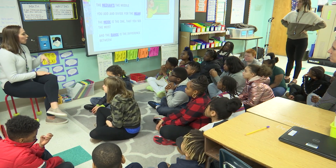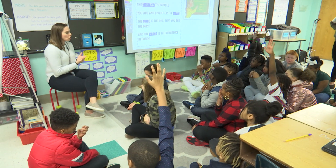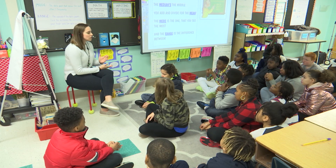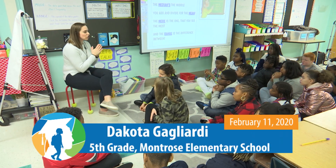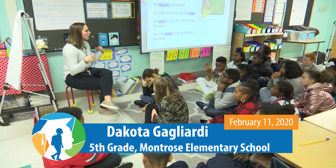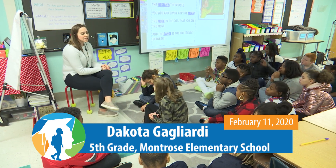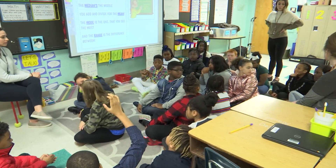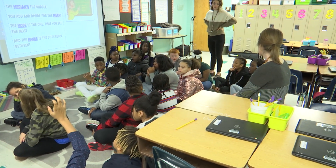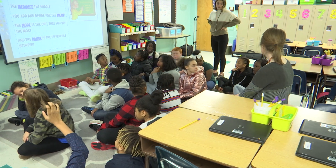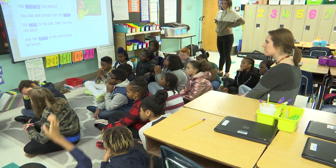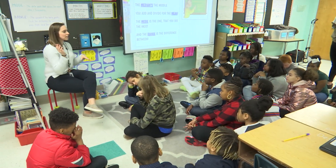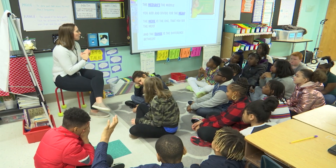Then we have our mode. What is our mode? Shania: the mode is the one that you see the most often. That's as simple as just looking at our data set and seeing which one is there the most. What about our median? Angelique: the median is the one in the middle, and you have to cross out each number to get to the middle value. Before I can cross off, what do I have to do to my data set? Put them in order from least to greatest.